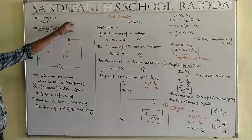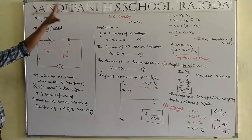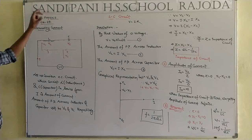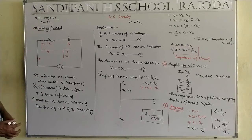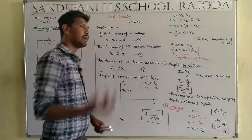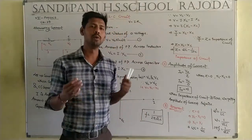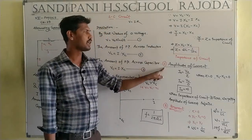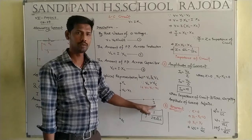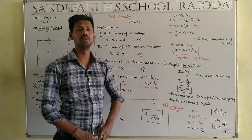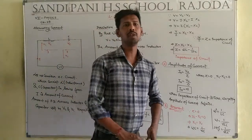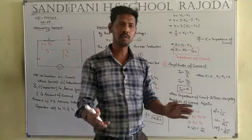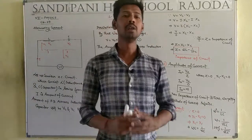So the derivation for the LC circuit covers: first, impedance of circuit Z = omega·L − 1/(omega·C); second, amplitude of current I₀ = V₀/Z, which becomes infinite when Z = 0; and third, the condition of resonance, F = 1/(2·pi·√(LC)). Thank you so much for watching this YouTube channel. Please like, share, and subscribe. Thank you, my dear students.